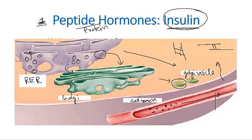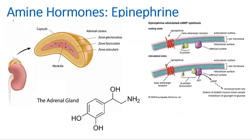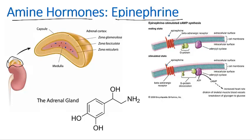These peptides are water soluble and can travel in the blood without any problem. Now let's look at the second type — amine hormones. One such example is epinephrine. This hormone is normally secreted by the adrenal gland, which sits like a cap on top of the kidneys. In the cross-section of the adrenal gland, we have the cortex and the medulla, each secreting different types of hormones, including epinephrine.